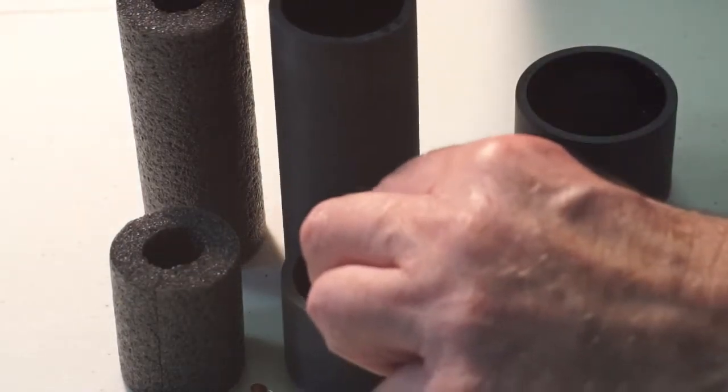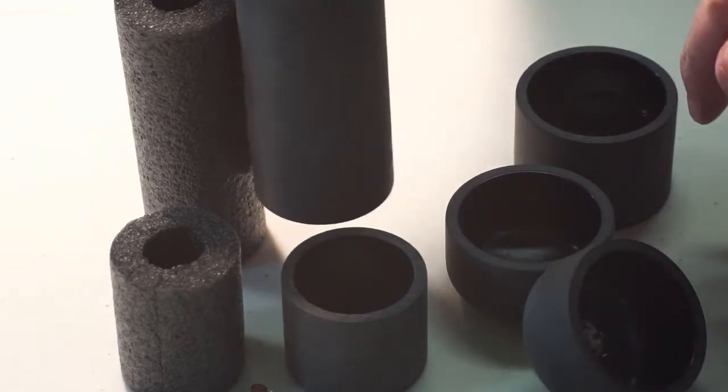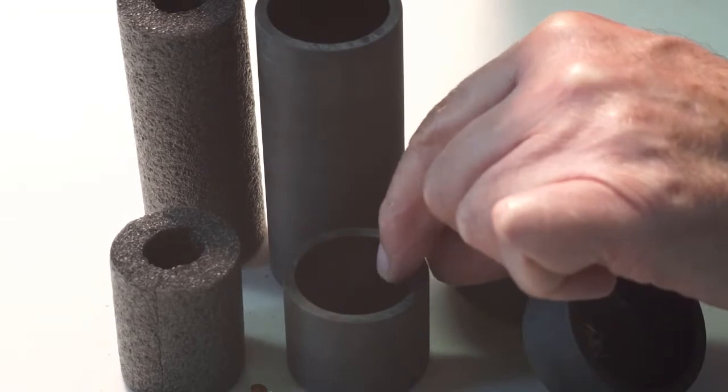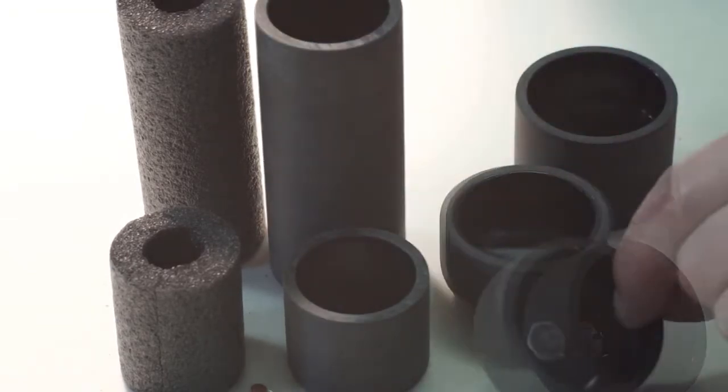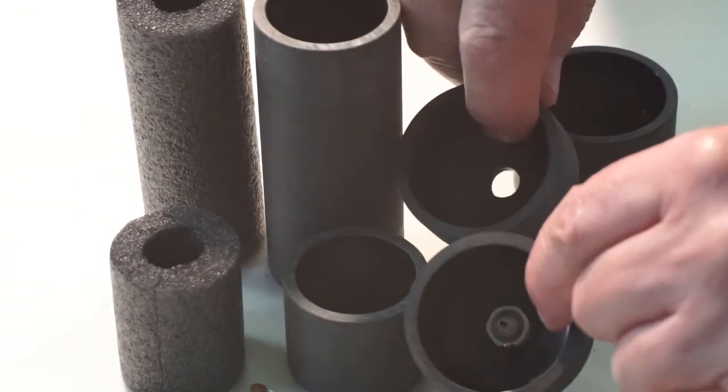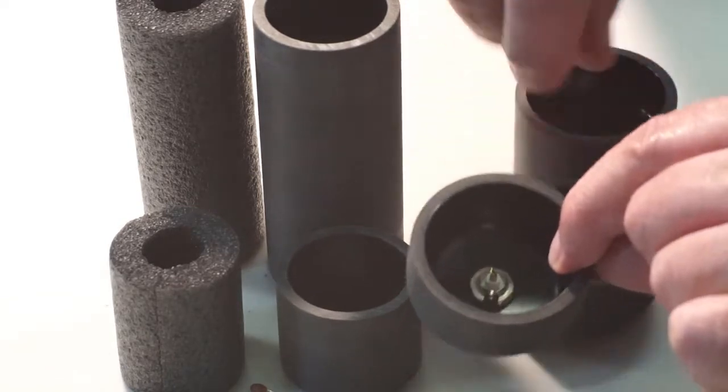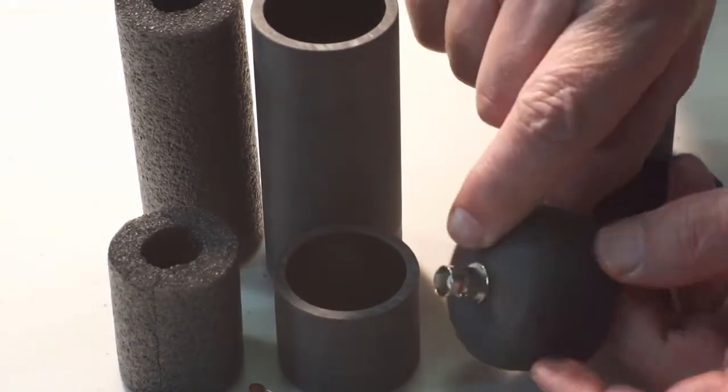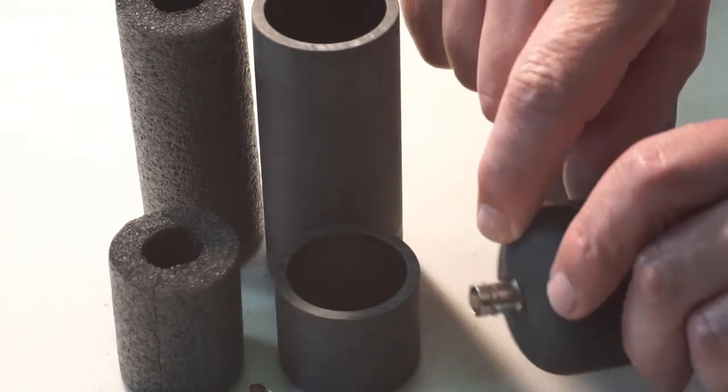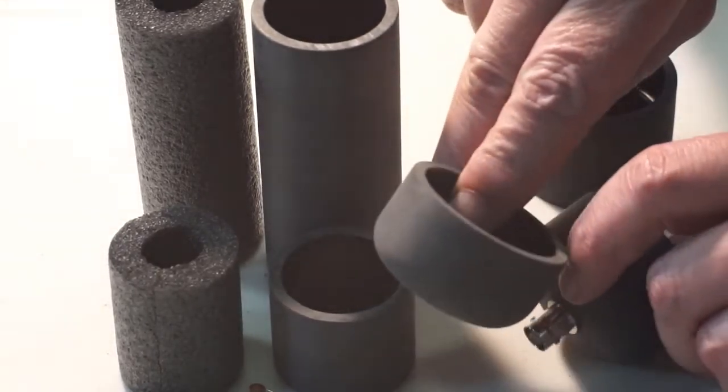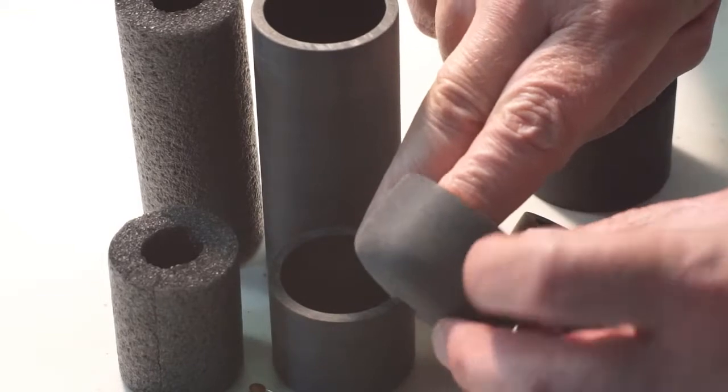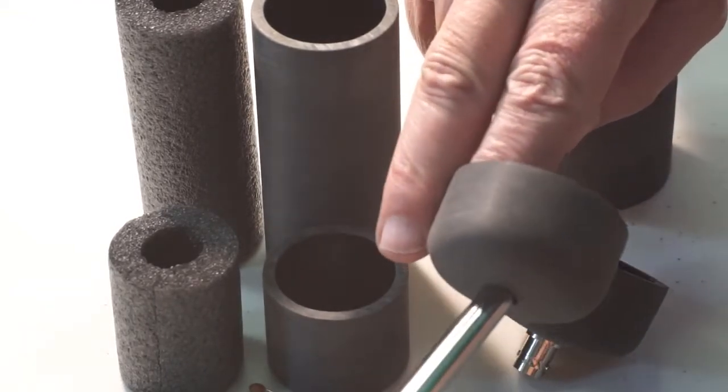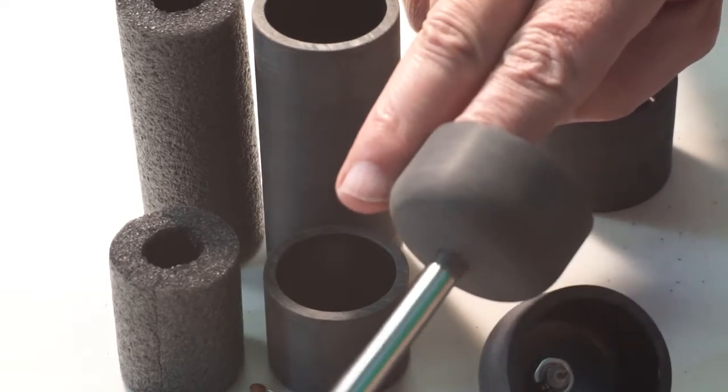Two pieces of inch and a quarter ABS pipe. One is 4 inches long, the other is inch and 3/8. Two inch and a quarter ABS end caps. I've got a female BNC connector at the end of one. The other one is drilled 3/8 plus a 64th clearance for this to be able to slide in good.